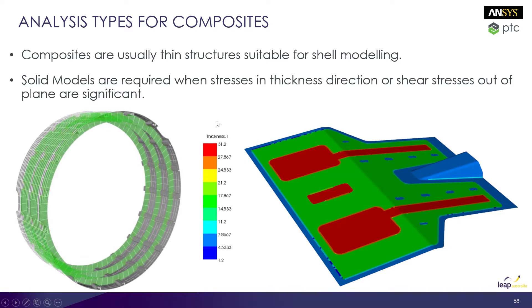We need to talk about what type of analysis we're going to do on our composite structure — whether we're using shell elements or solid elements. Composites are generally fairly thin compared to their other dimensions, which makes them suitable for shell modeling, but there are certain circumstances where we need to look at modeling with a solid element because of the type of loading or the structure itself. In this case of a rear diffuser, we have thicknesses up to 31mm because of a sandwich composite, which means it is reasonably thick, and using shell elements might not be the most accurate or representative way of analyzing this structure.